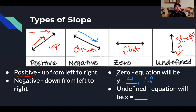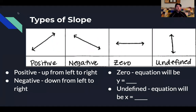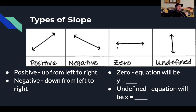For undefined slope, it's the same idea but it's x equals a number: x equals 4, x equals 0, x equals 17. So depending on what you see, your slope is either positive, negative, zero, or undefined. If it looks like it's going up left to right — positive. Going down — negative. A flat horizontal line — zero slope. And if it is a perfectly straight vertical line with no tilt, that is undefined slope, meaning we can't figure out what it is.